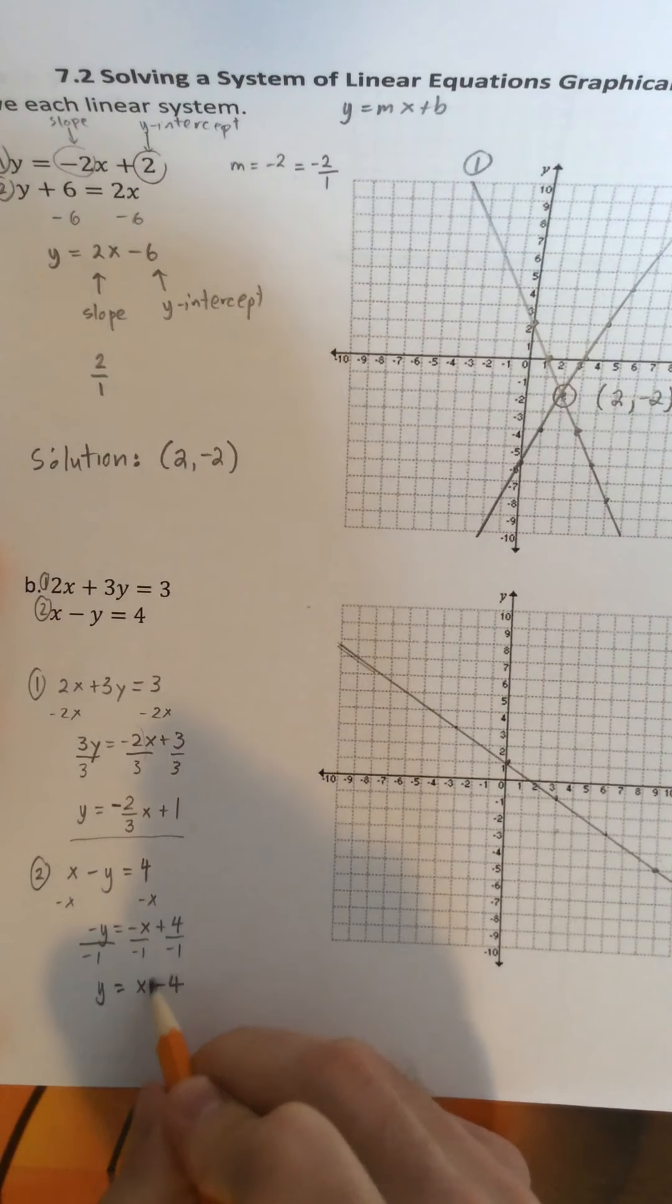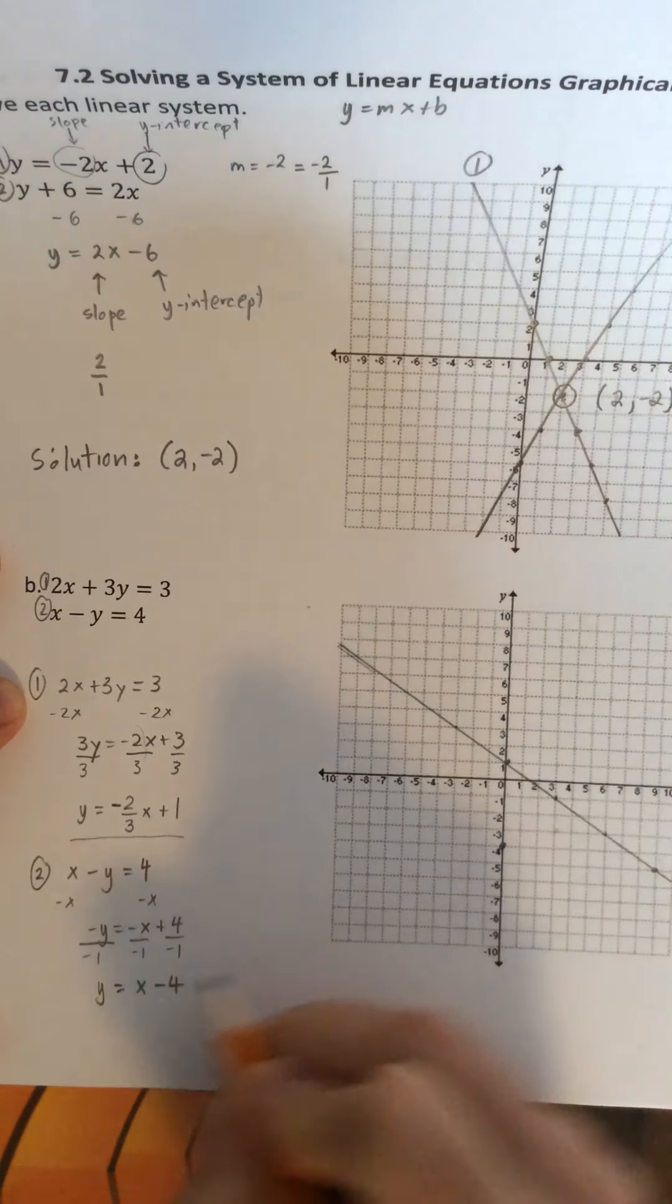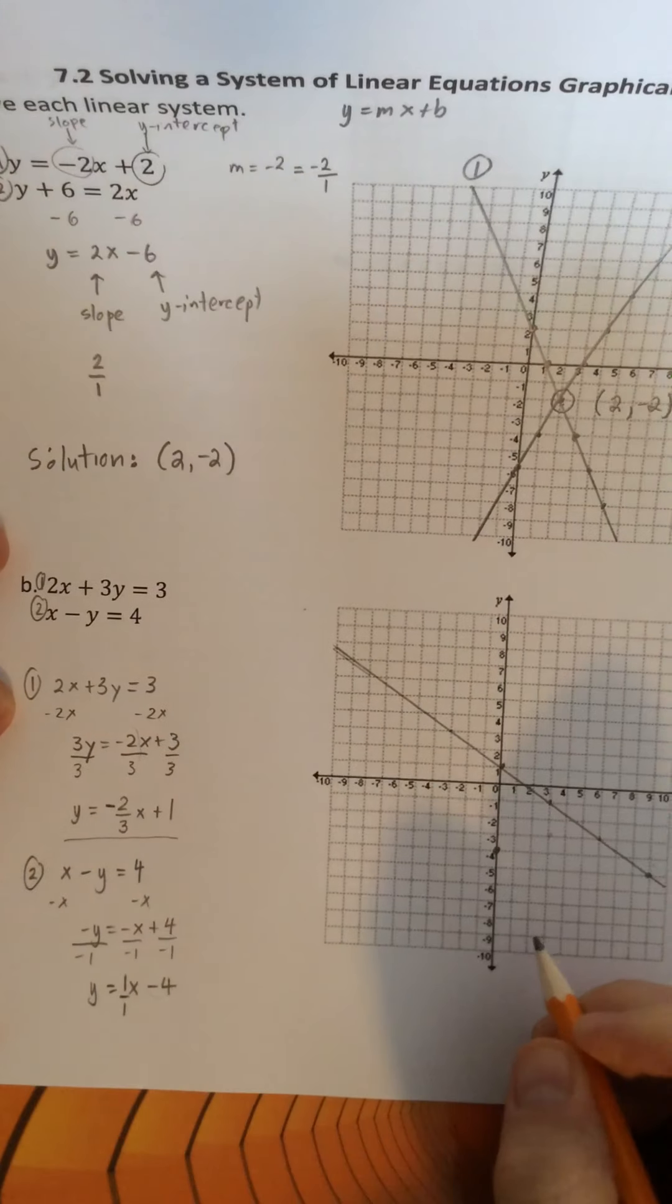So I'll remind you that the y-intercept here is negative 4. And the slope is x, which is, well not x, the slope is 1 because this is 1x. So if we are writing this as a rise over a run, it'd be 1 over 1.